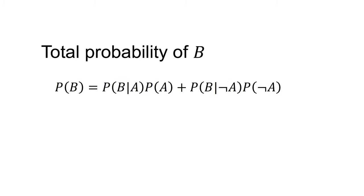The denominator P(B) is the total probability of event B. If the total probability of event B is not directly available, we can often calculate it using conditional probabilities: P(B) equals the probability of B given A times the probability of A, plus the probability of B given not-A times the probability of not-A.